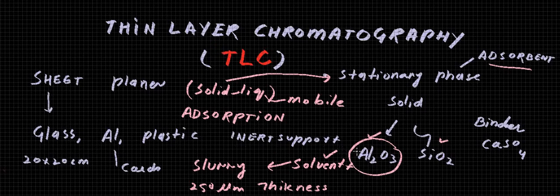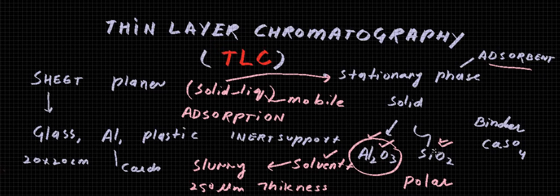So these adsorbents act as the stationary phase, and the mobile phase of different polarity is used to separate components. These stationary phases like alumina and silica, and some others, they are polar in nature due to the oxygen atoms present there. And the mobile phase will be non-polar or less polar in nature.